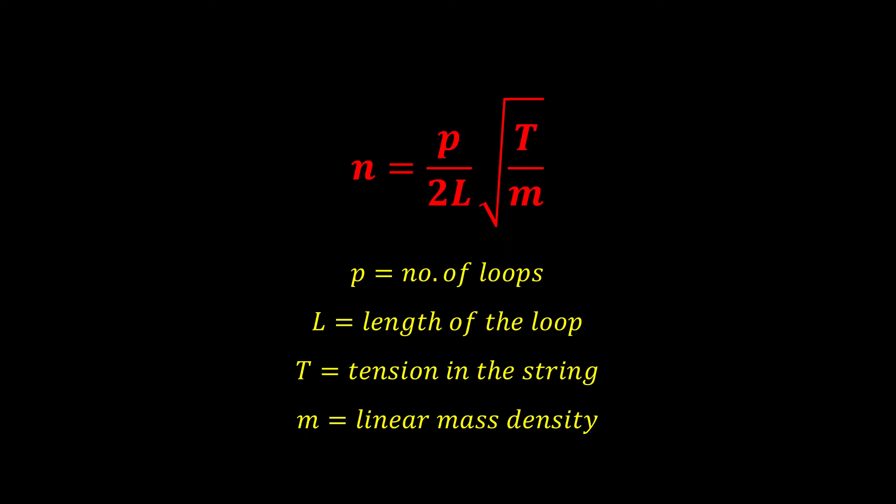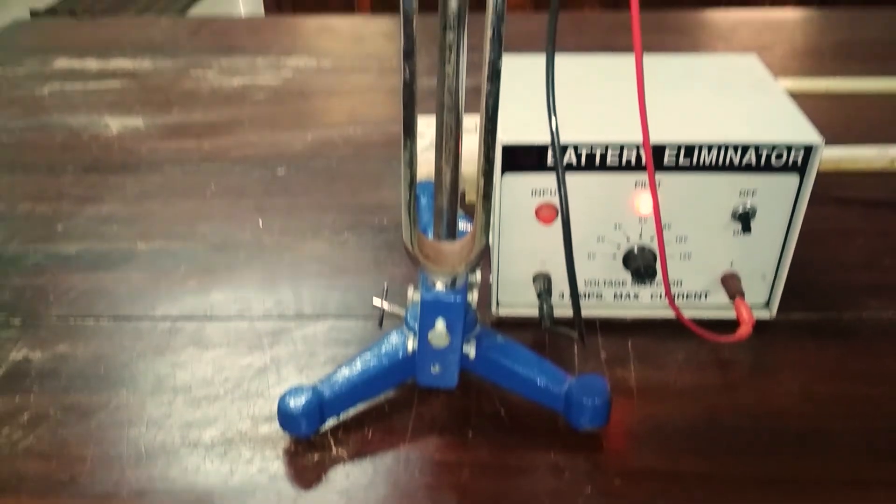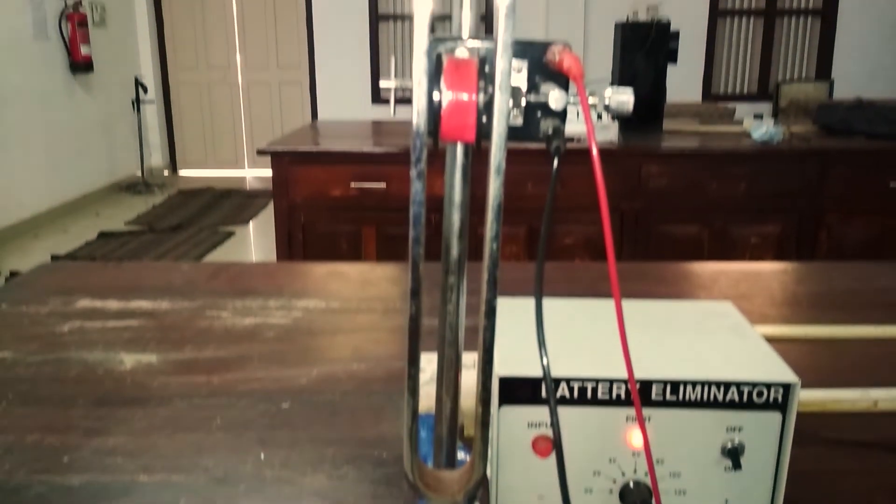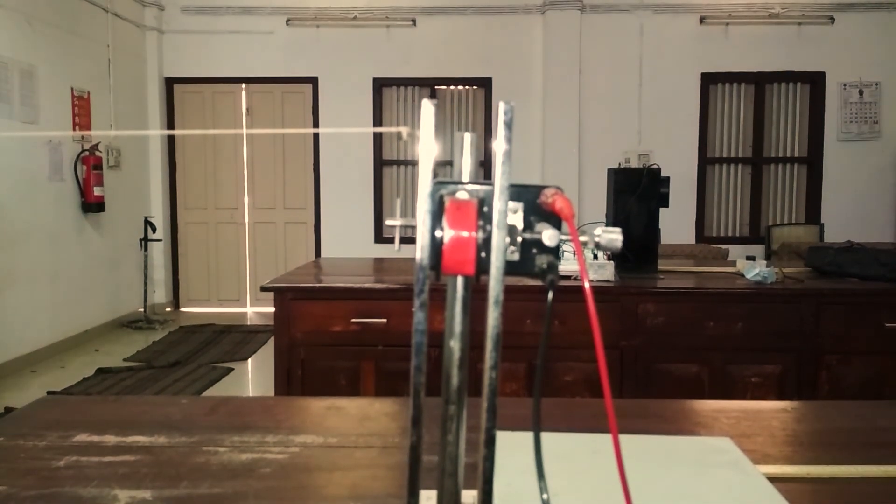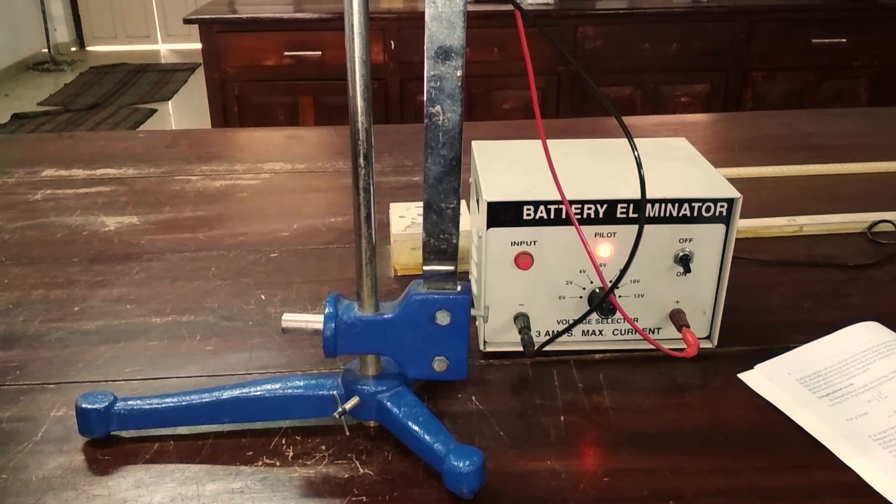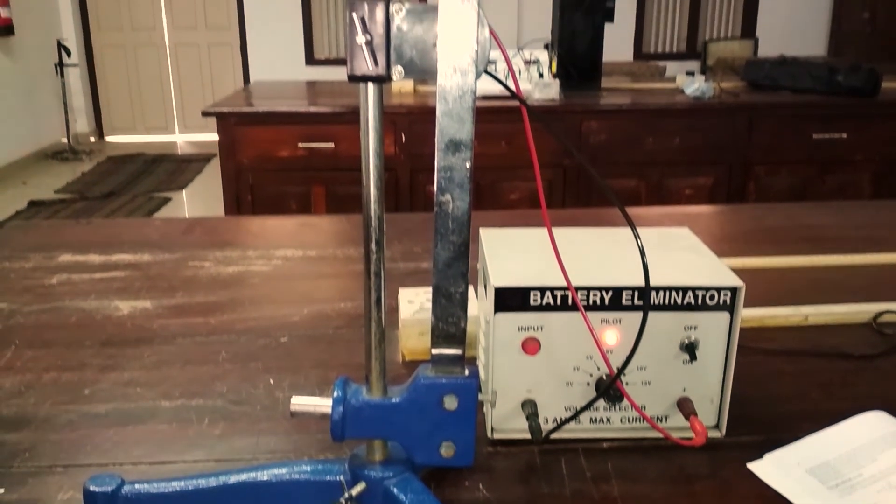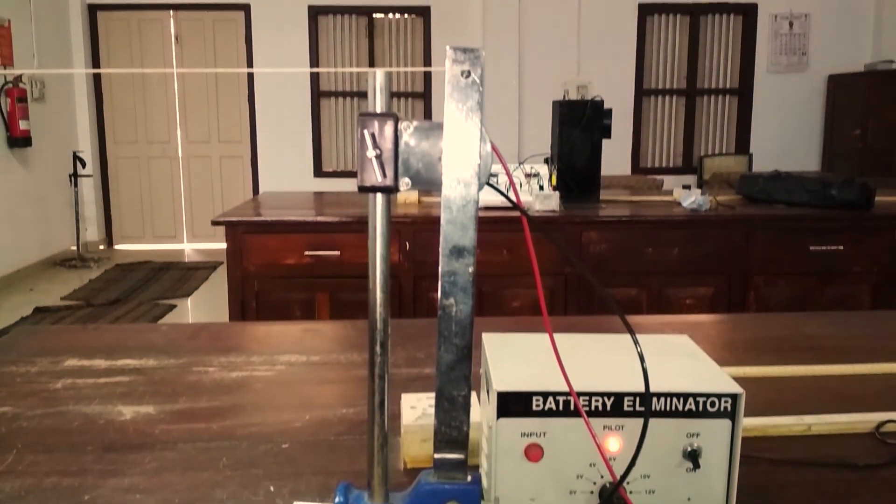Remember, in both cases, the string should be uniform and inextensible. Well-defined loops should be obtained by adjusting the tension with the milligram weights and the friction in the pulley should be the least.